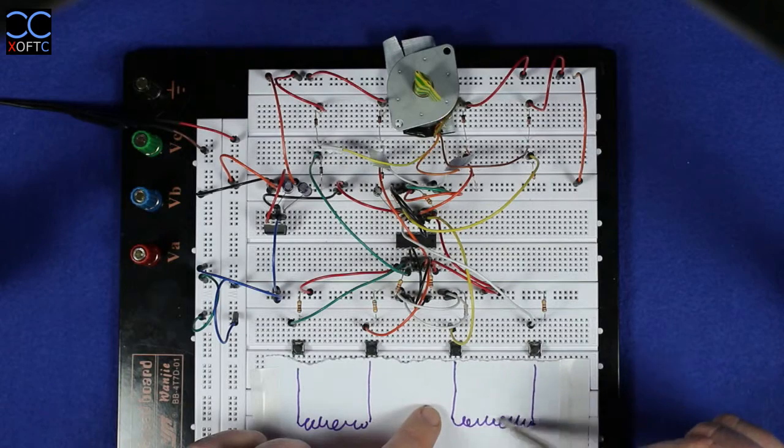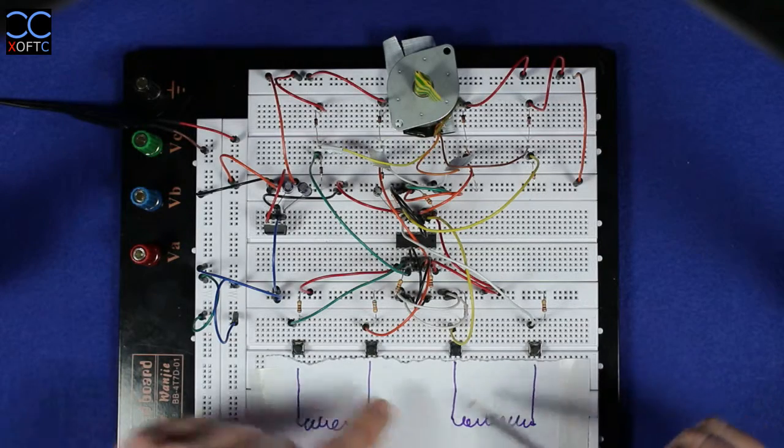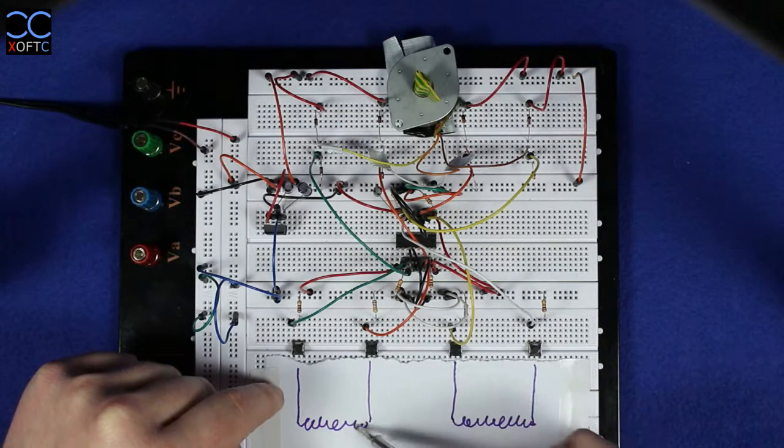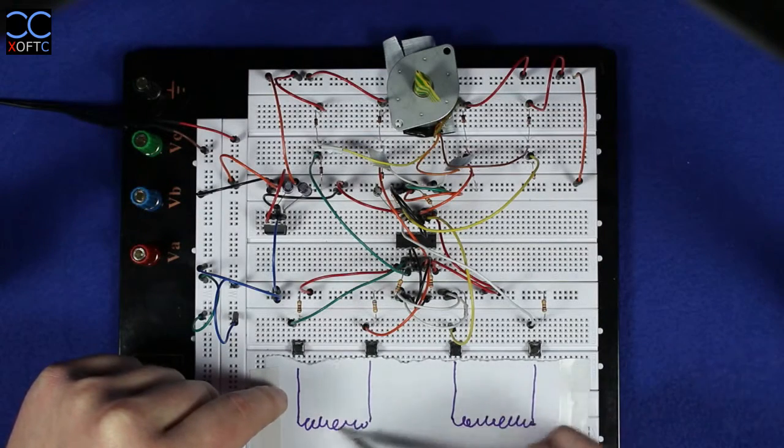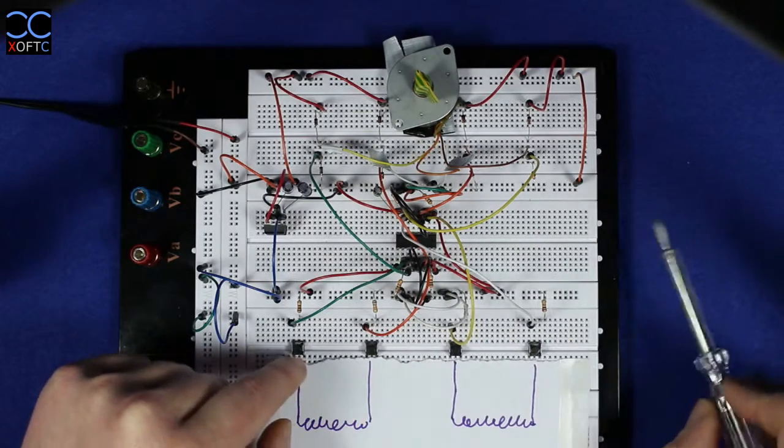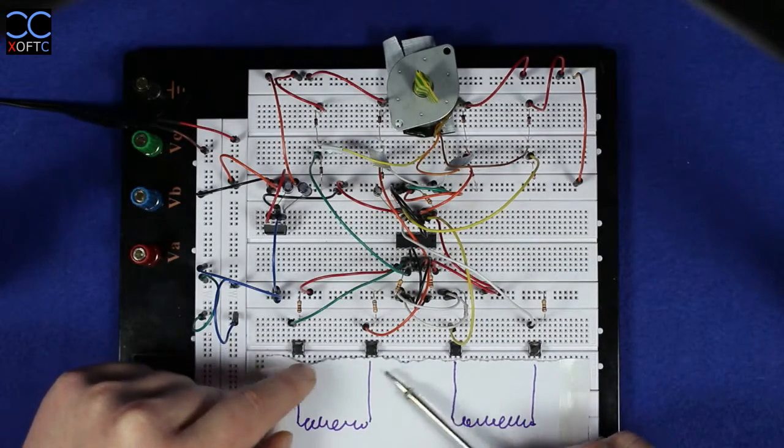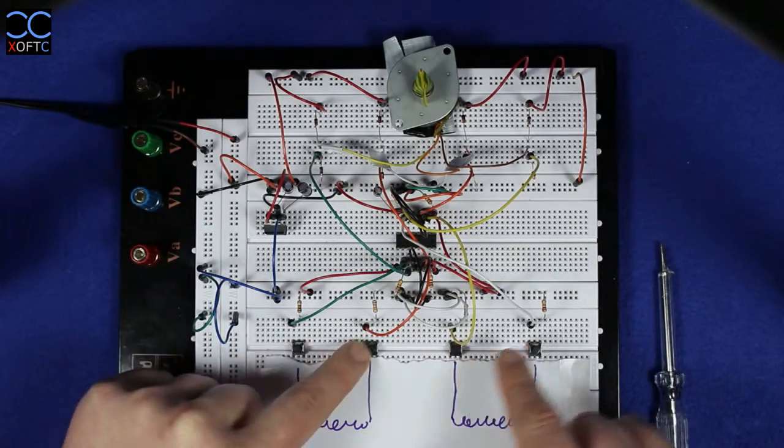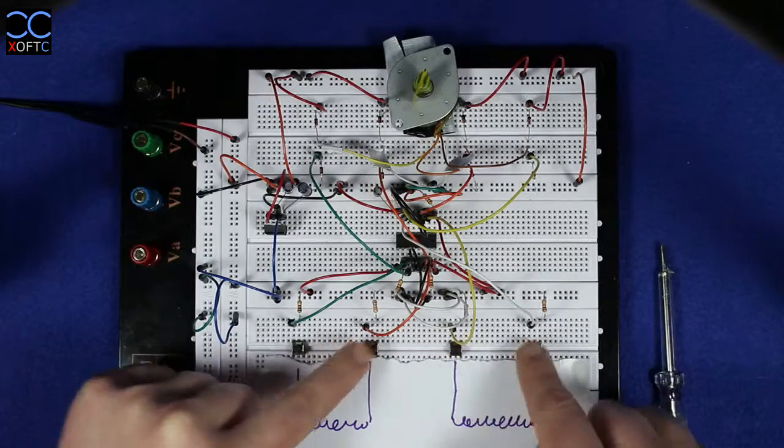Every time we're giving a high, so we're driving the coil in this direction. Then we're giving a high to this coil and driving it in the same direction. Then we're giving a high to the other end so we're driving it in the opposite direction, and also the other one. That's how we complete a cycle.